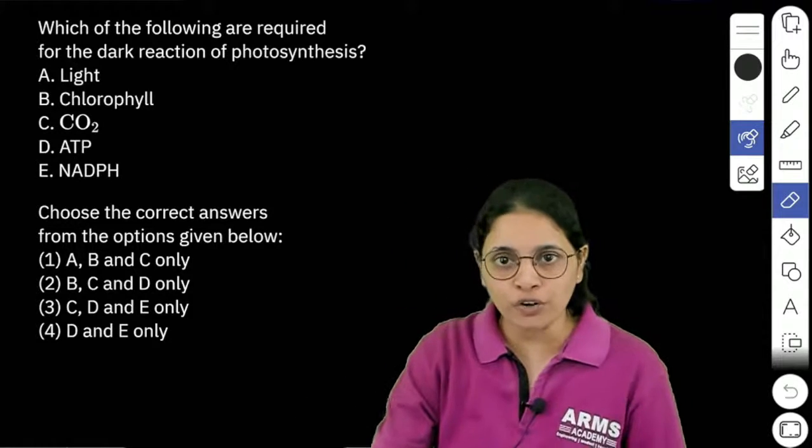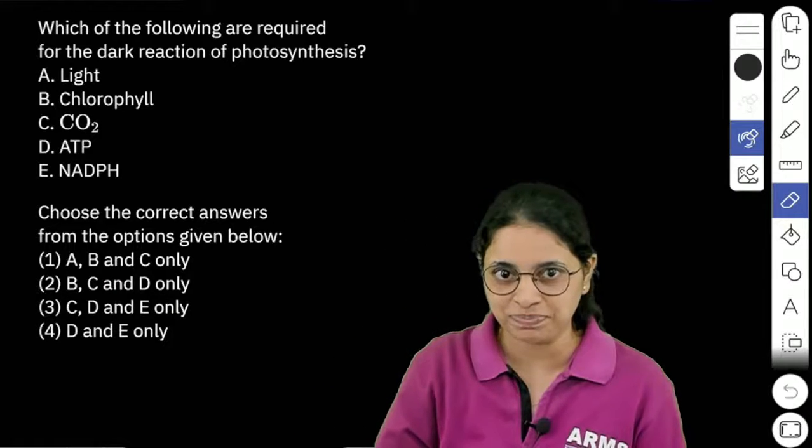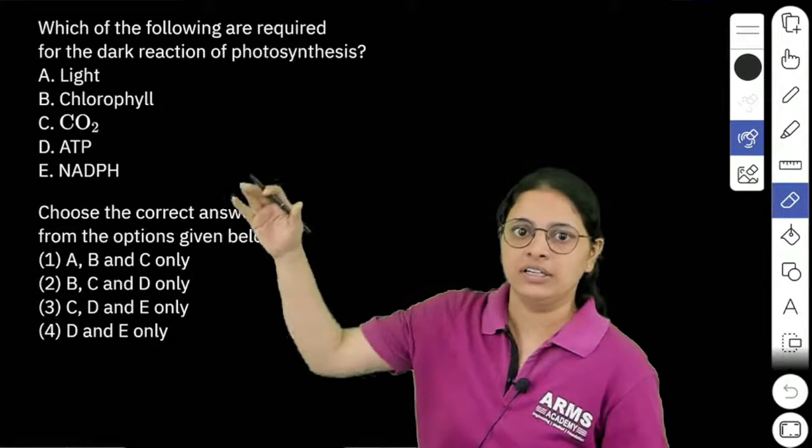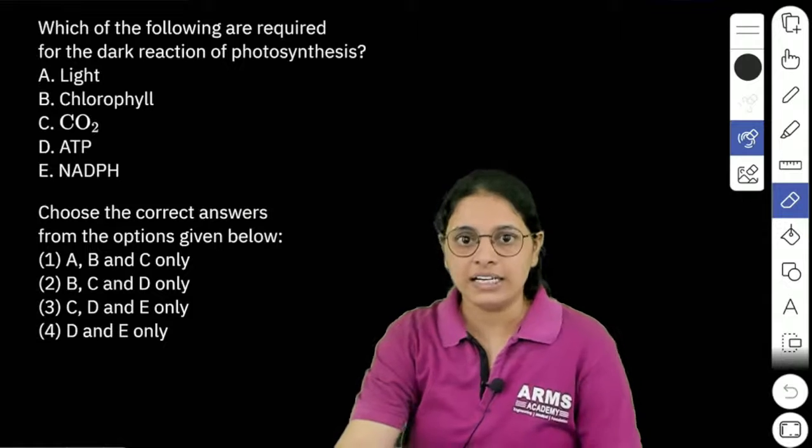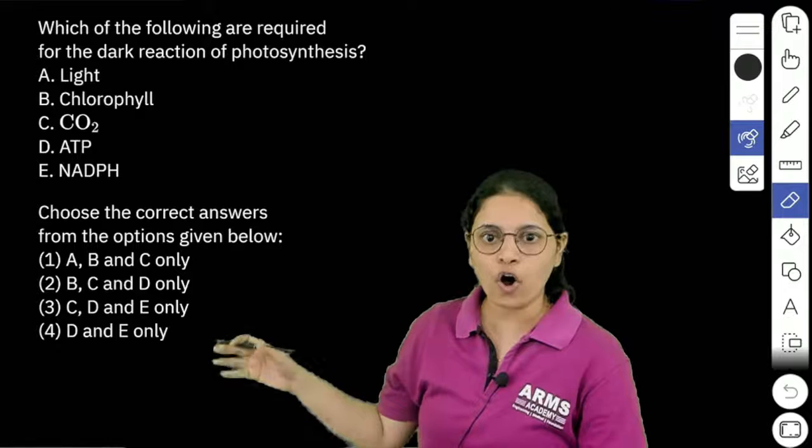Question is, which of the following are required for the dark reaction of photosynthesis? And the given materials are light, chlorophyll, CO2, ATP and NADPH. And these are the options.